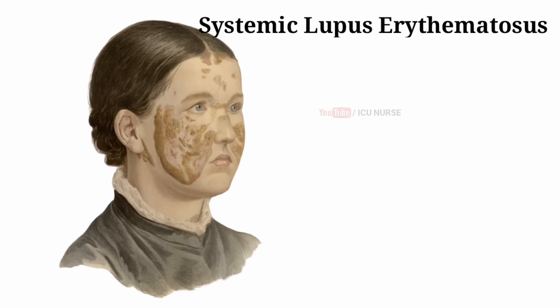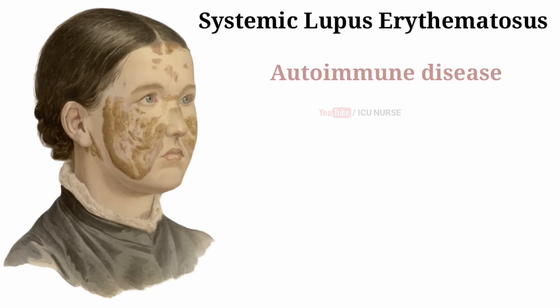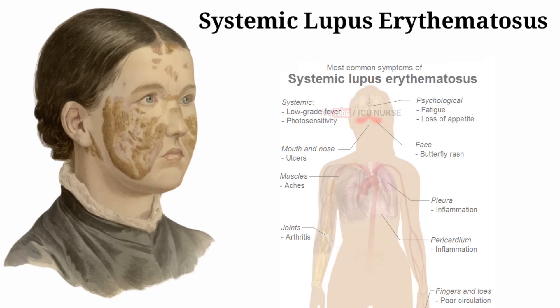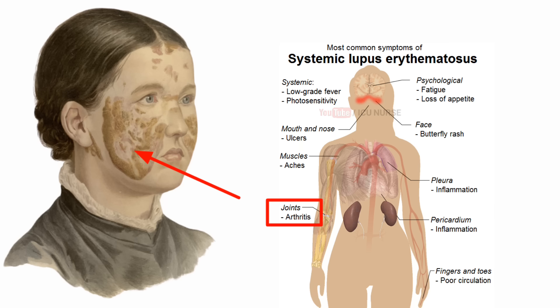Systemic lupus erythematosus is an autoimmune disease in which the immune system of the body mistakenly attacks healthy tissue. It can affect the skin, joints, kidneys, brain, and other organs.